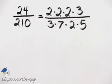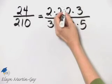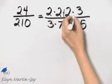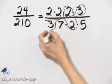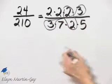Once we prime factor the numerator and the denominator, we can see if there are any common factors. Notice there's a common factor of 2, and there's also a common factor of 3. Now I'm going to write this a little differently.